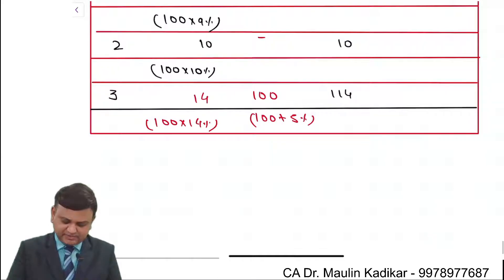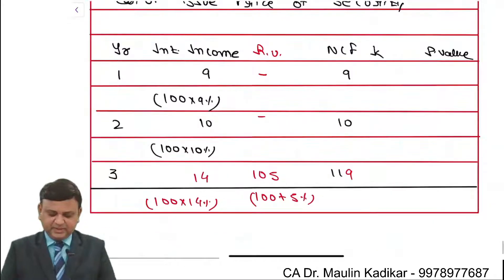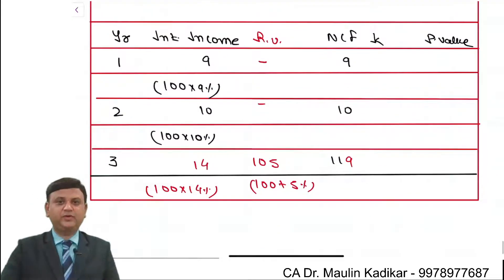I am sorry friends, redemption value is 105. So last year you will receive 119. Now it will be discounted with the required rate of return to find P0.